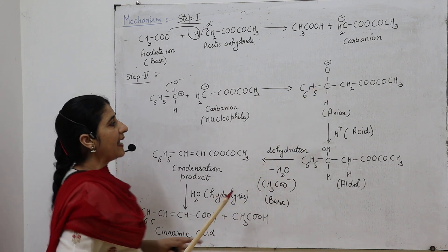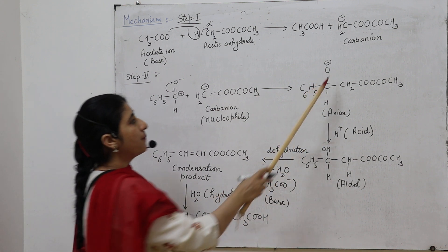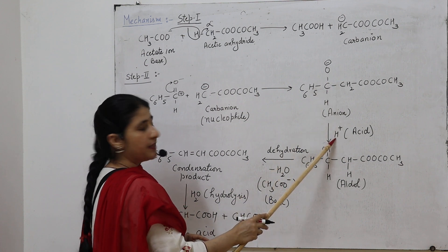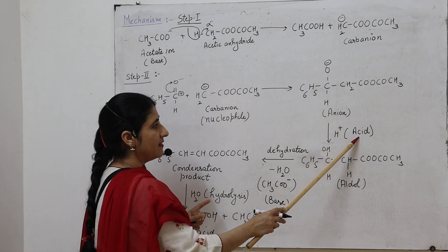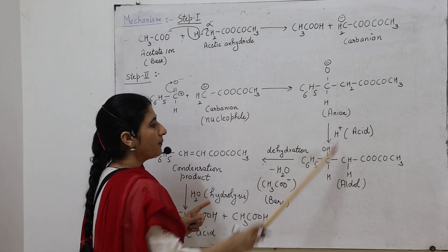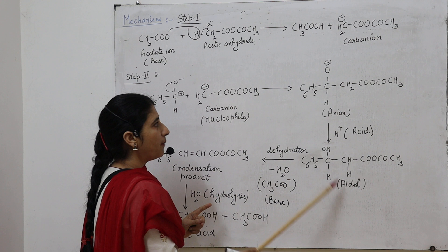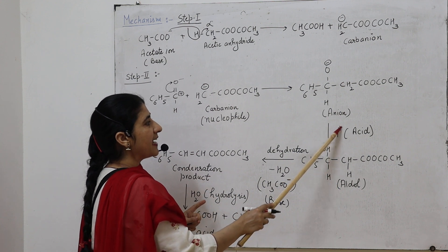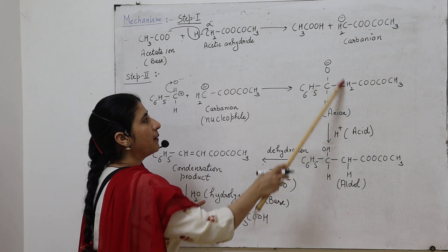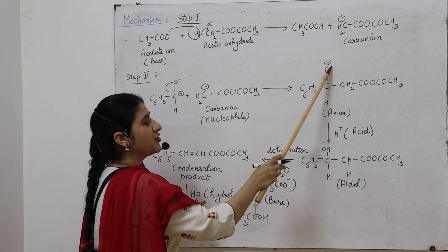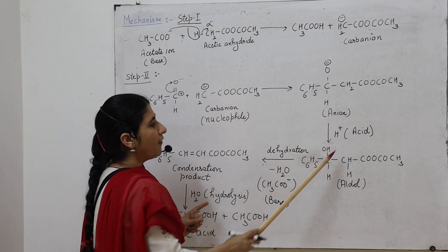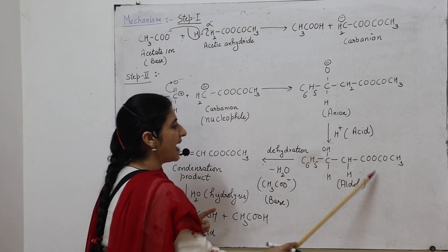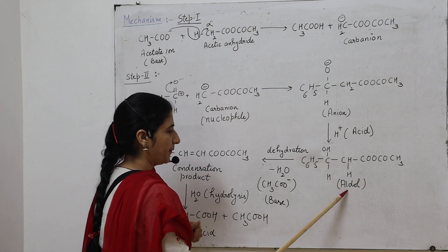The carbanion attacks this positively charged carbon center with formation of a carbon-carbon sigma bond. Due to migration of the carbanion toward the electron-deficient center, we get another anion due to the negative charge on the oxygen. This anion abstracts H⁺ (a proton) from the acid to form the aldol product, where H⁺ combines with OH⁻ to form an alcohol group.